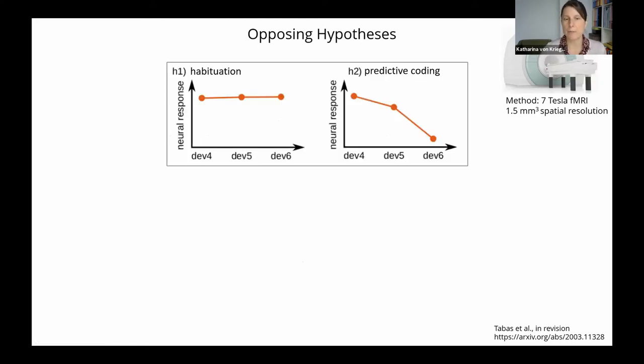So to summarize, for the different deviant positions, we expect similar responses if we assume that sensory pathway nuclei correspond to a habituation view, while we expect differences between the deviants in the predictive coding view.